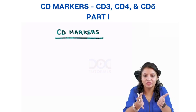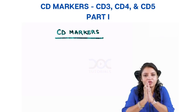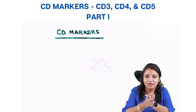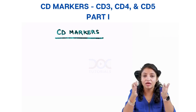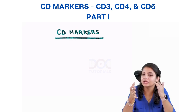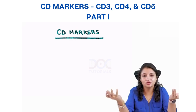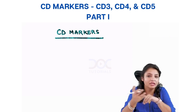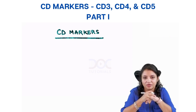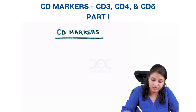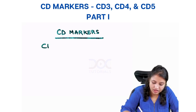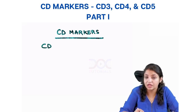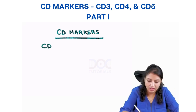When we talk about CD, there is a simple clue to remember. Any number which is less than 9 is usually a T cell marker, and usually more than 19 are B cell markers. There are special CD markers which are asked in the exam which are unique.